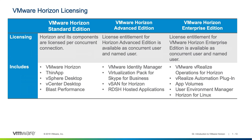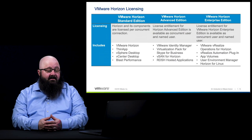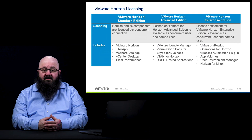The Advanced licensing includes all of that along with the Identity Manager piece, the Virtualization Pack for Skype for Business, vSAN for Horizon, and RDSH hosted applications. This means that not only can you do RDSH desktops, but you can also do applications. The vSAN for Horizon allows you to leverage vSAN as a storage option for Horizon environments. The Virtualization Pack optimizes performance of Skype for Business within the environment.